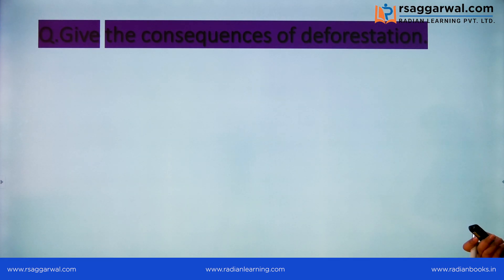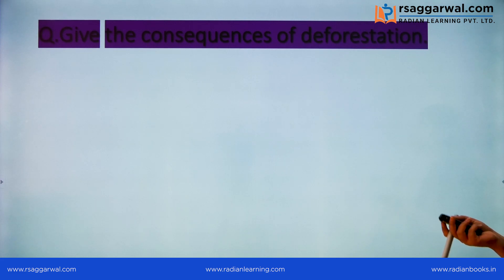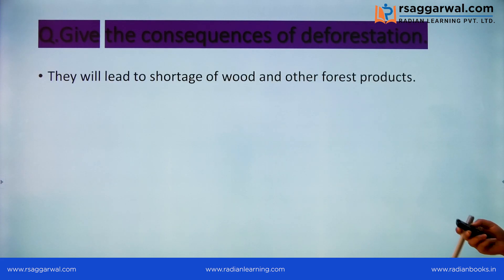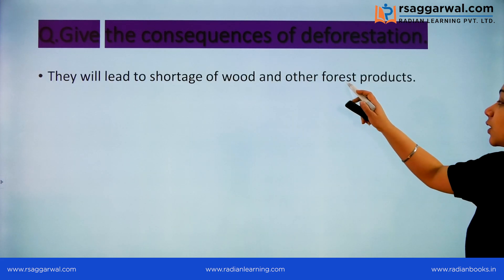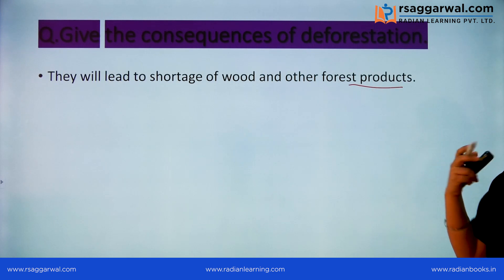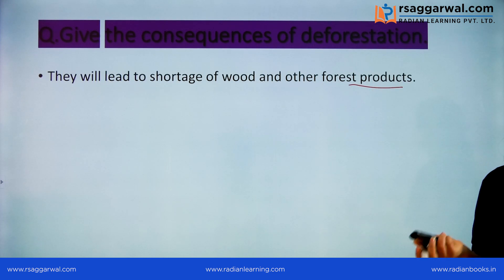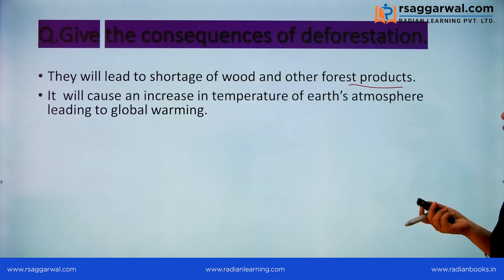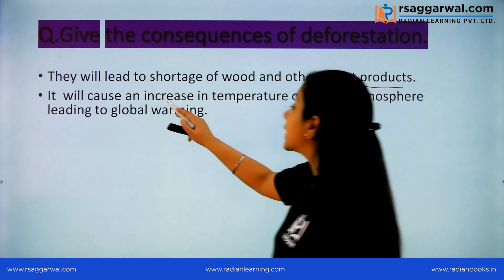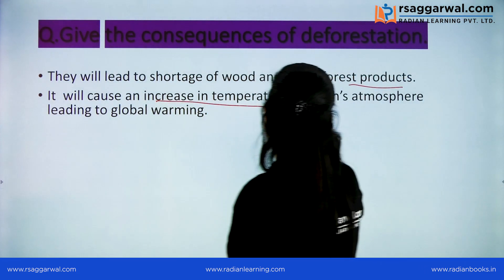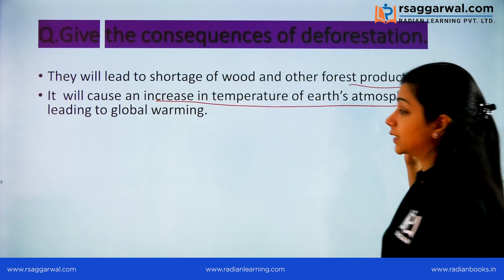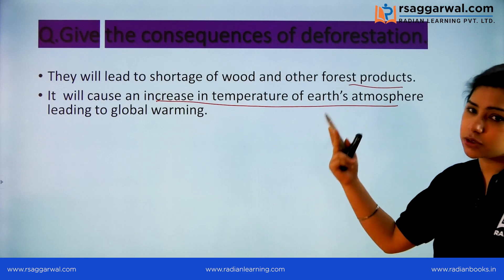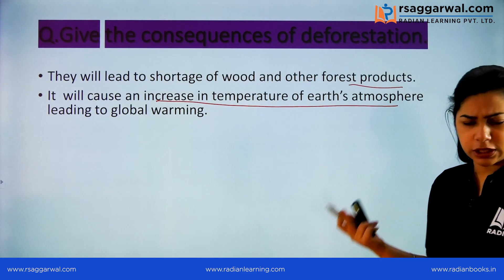Now, the consequences of deforestation: what will happen because of it? First, there will be a shortage of wood and other forest products. If you take all the wood, then obviously wood will be in short supply. Next, it will cause an increase in the temperature of Earth's atmosphere, leading to global warming.